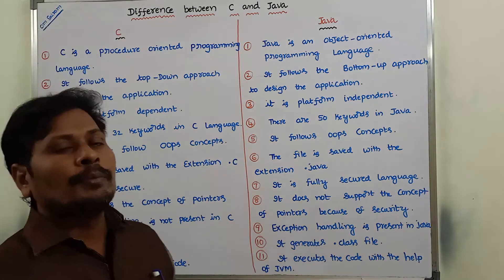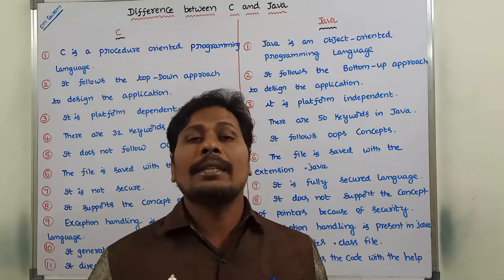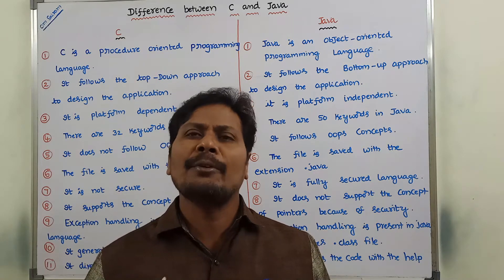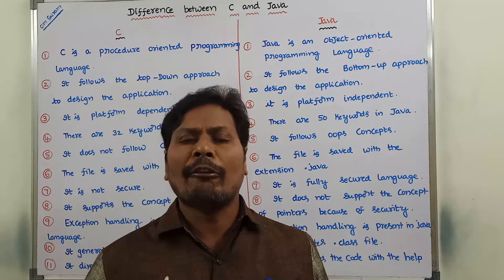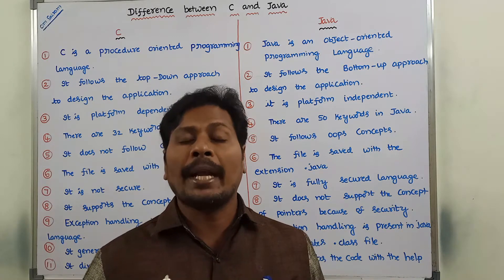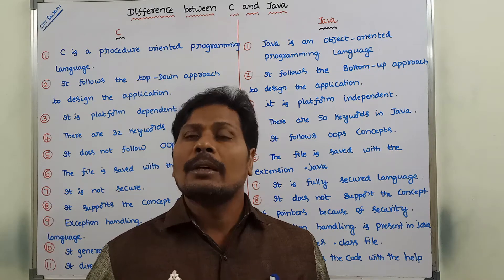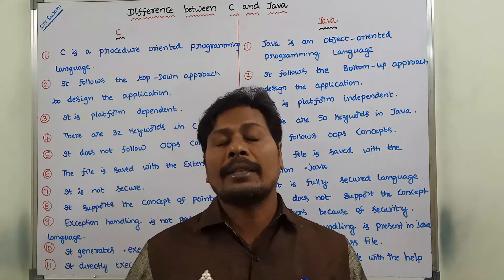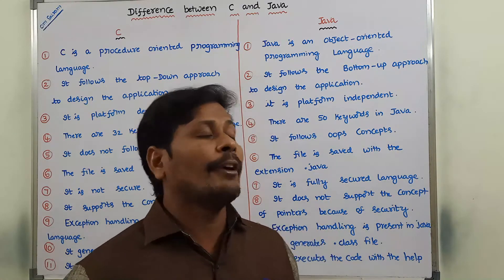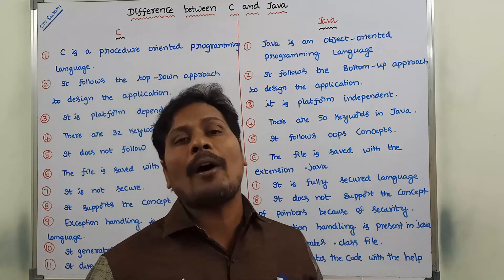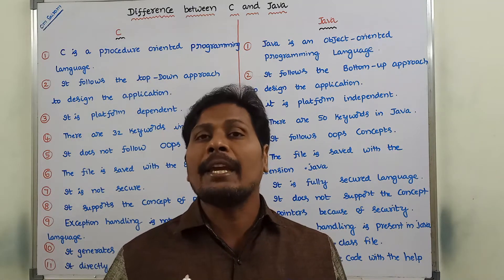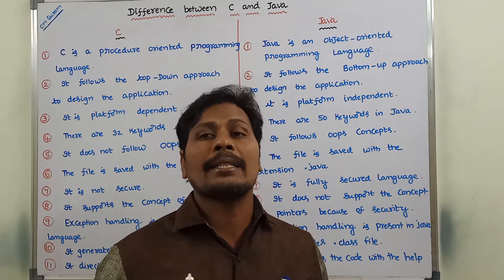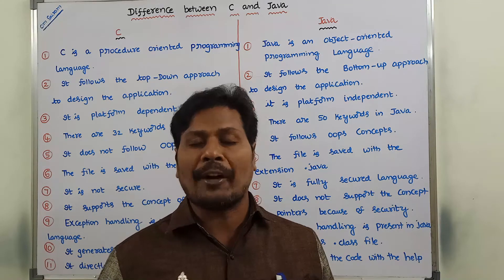Next: In C language there are 32 keywords — for example: for, while, do while, break, continue. So there are 32 keywords in C language. Whereas in the case of Java, there are 50 keywords, and each and every keyword performs a specific function.